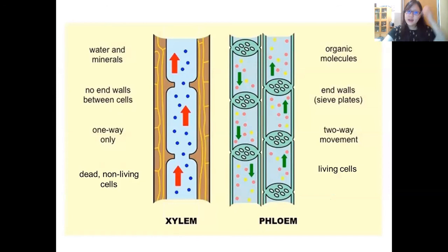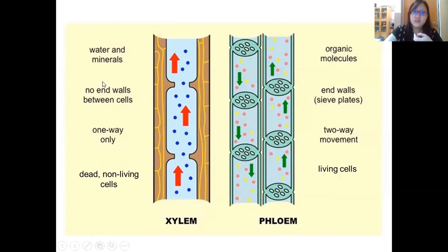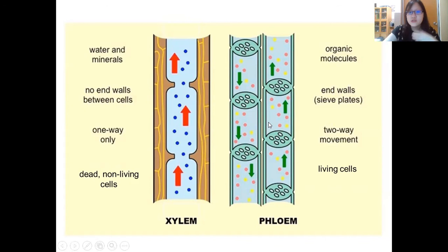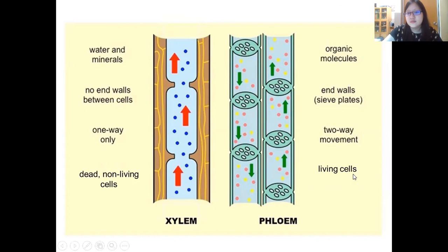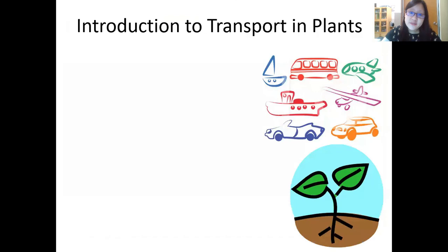In conclusion, xylem transports water and mineral ions, while phloem transports assimilates — organic molecules. Xylem has no end walls between cells (they break down), whereas phloem has sieve plates. Xylem transport is one-way only — upward from roots to leaves. Phloem can transport in both directions. Xylem cells are dead non-living cells, whereas phloem sieve tube elements are living cells, supported by companion cells which are also living and essential for phloem function.